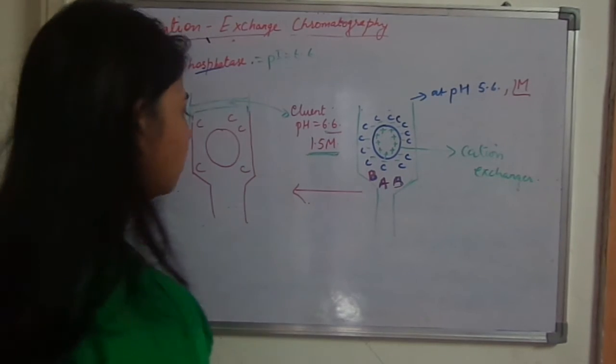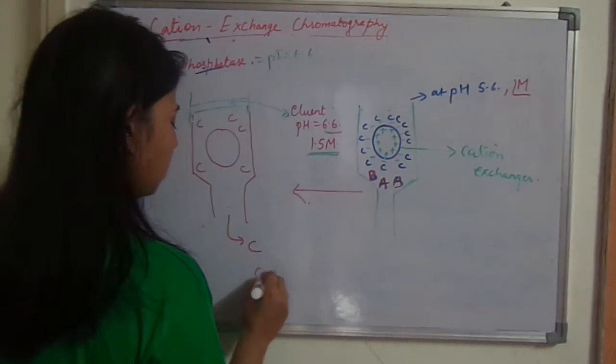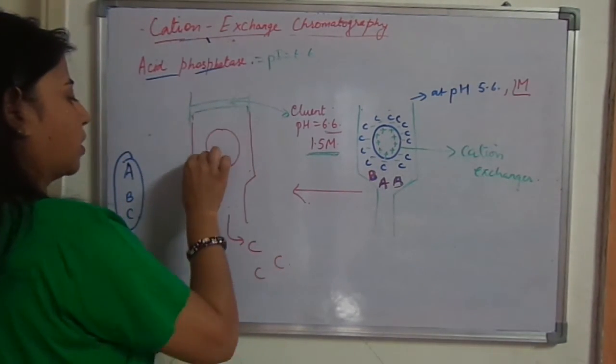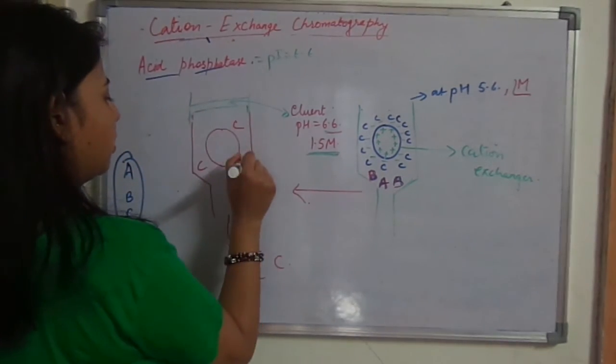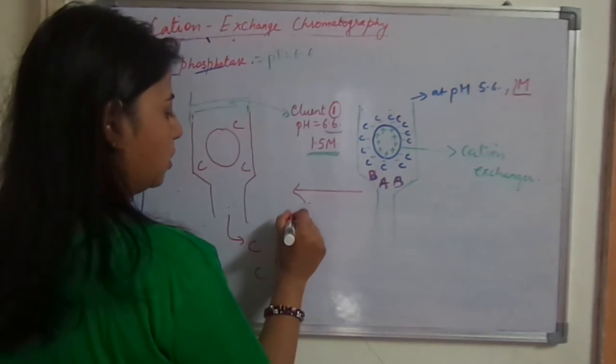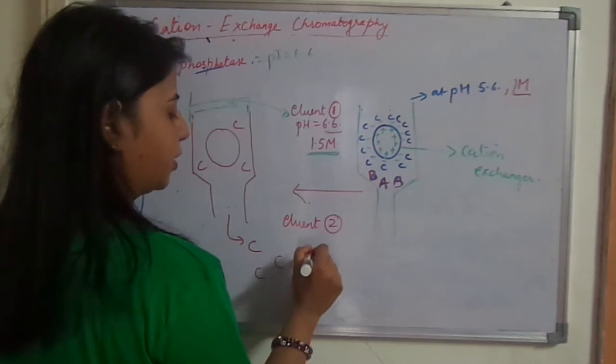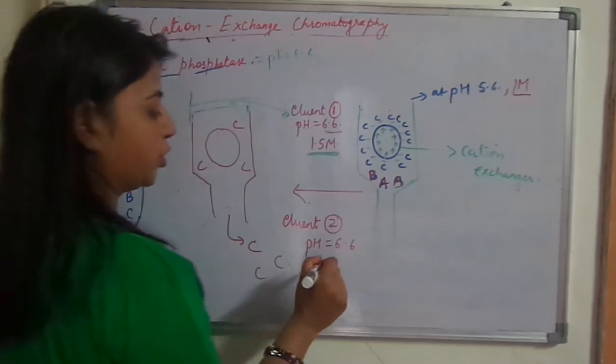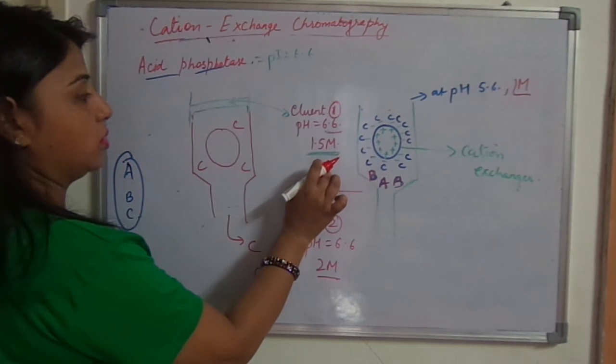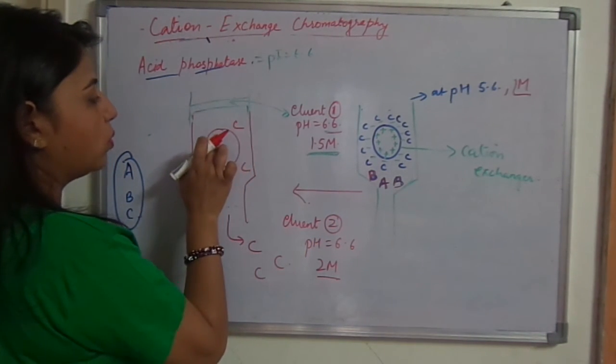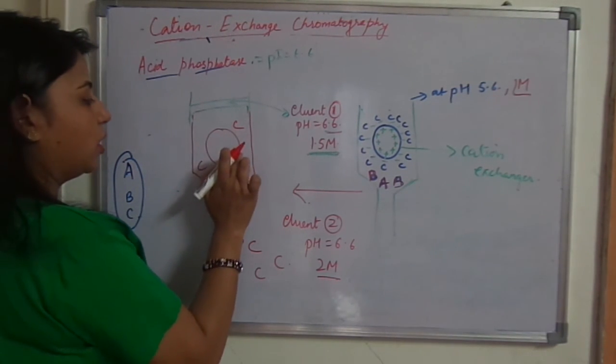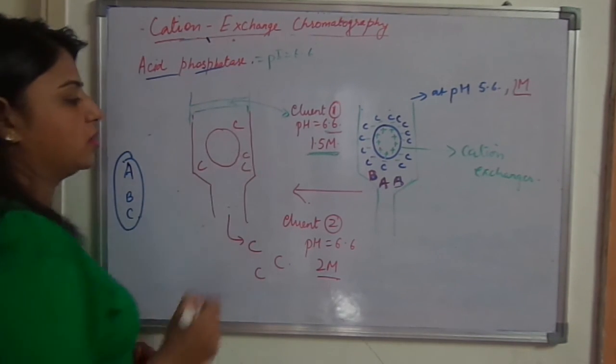So in next step what will happen? This C will come out. This won't be removed from here. Now if you suspect that some C's are left over here still, and we have to separate them further, so this will become eluent 1. You can take another eluent, that is eluent 2. Again it should be at pH 6.6 because this is the isoelectric point. And you increase the ionic strength to 2 molar. So more buffer, if you suspect that some C is left bound over here, so more buffer will come and bind over here and will separate this C from this one.